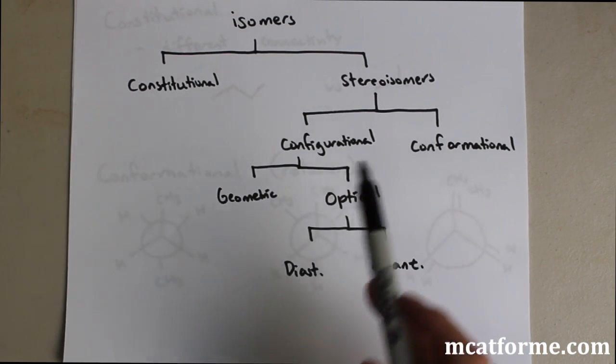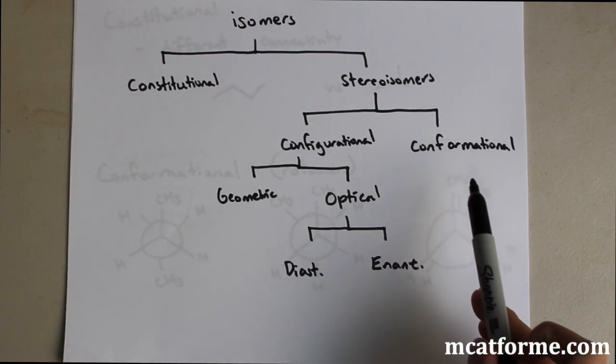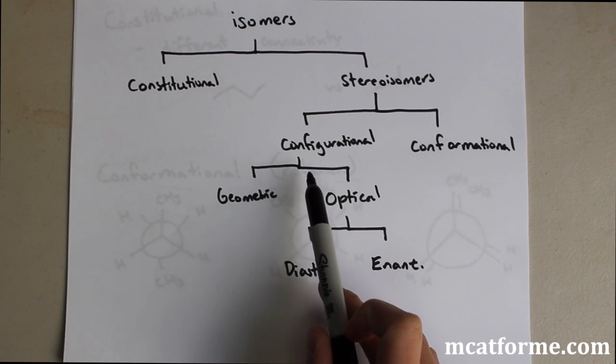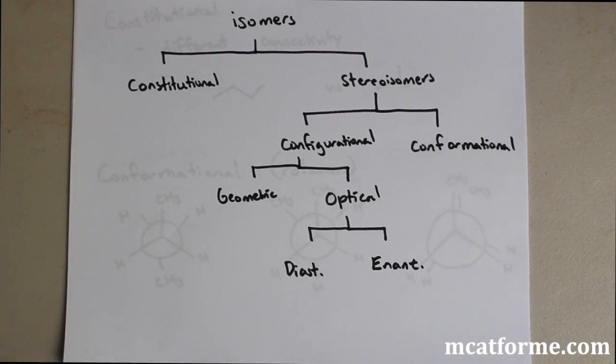Within that, stereoisomers are divided into configurational and conformational. Within configurational is geometric and optical. Within optical is diastasis and enantiomers. It seems super confusing, but let's kind of just go over them and it should make it a lot simpler.